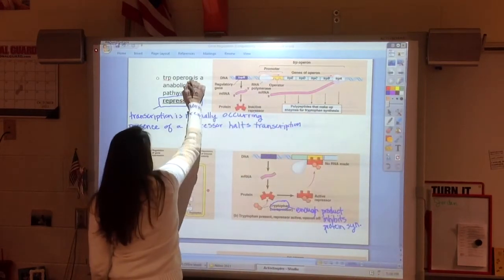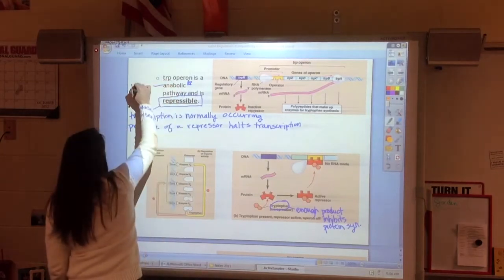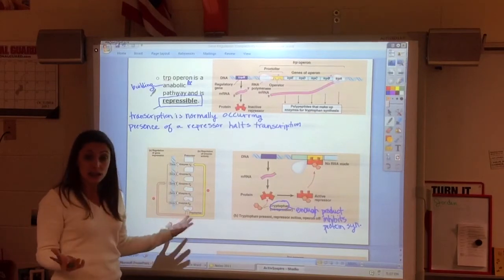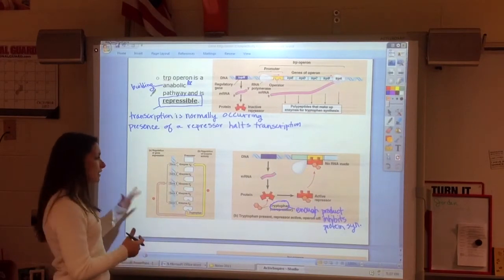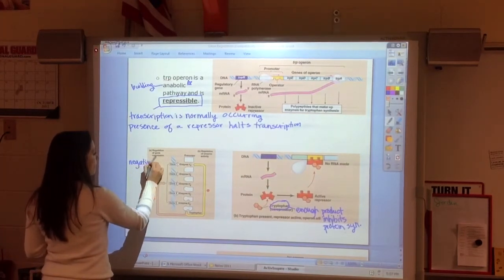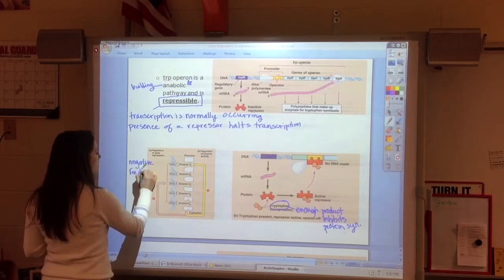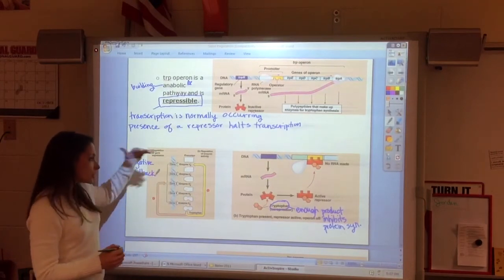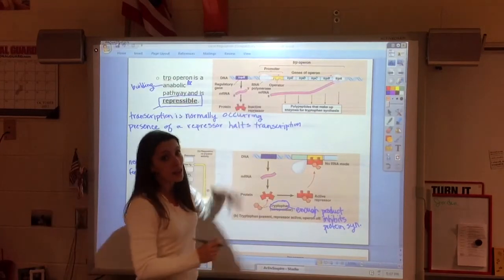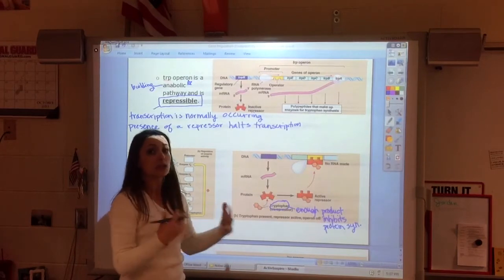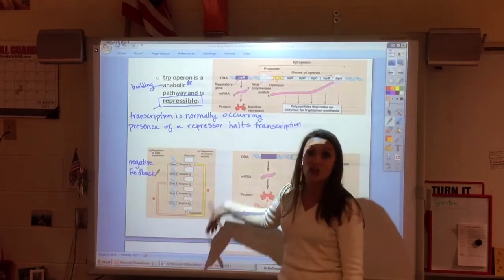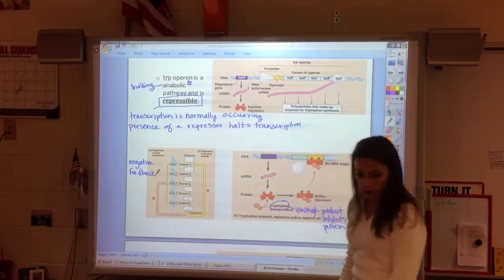We're inhibiting protein synthesis all the way back at transcription. This is called a repressible operon. I've got all these genes together, and if I don't need them, I can turn them off. It turns out that most building reactions are going to be repressible. I'm going to make it as long as I need to. We do want to know this is an example of negative feedback. If I have enough product, I stop the reaction. We don't just stop the enzyme reaction, we actually also stop making the enzymes.